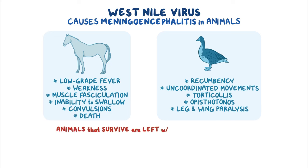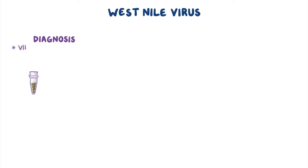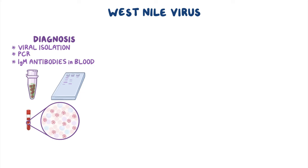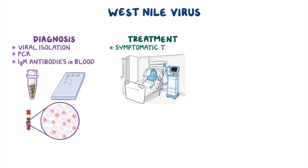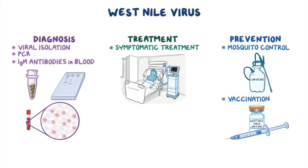Animals that do survive are left with chronic disabilities. Human infections are usually mild or asymptomatic; however, elderly or young people or those with underlying medical problems may develop meningitis or encephalitis. Diagnosis is made by viral isolation, PCR, and looking for IgM antibodies in the blood. Currently, only symptomatic treatment is provided, and prevention involves mosquito control and vaccination of susceptible animals. There are no vaccines for people.